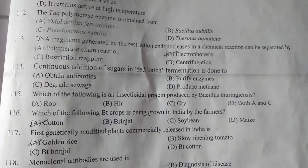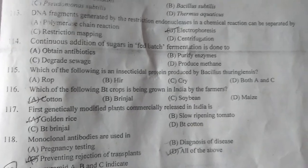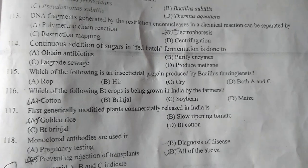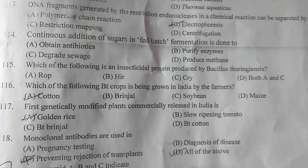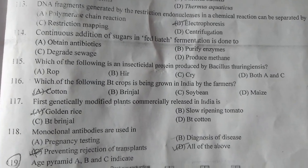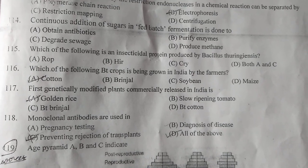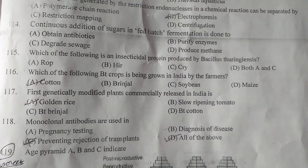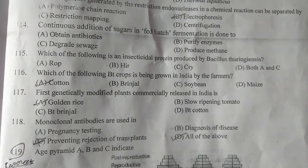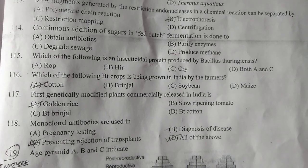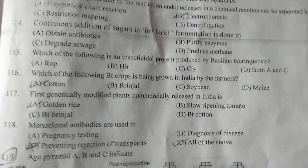Question number 116: Which of the Bt crops is being grown in India by farmers? A is the correct answer — cotton. Question number 117: First genetically modified plant commercially released in India — A is the answer — Golden Rice.